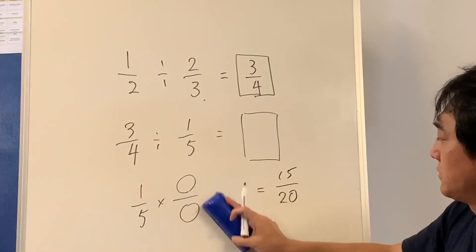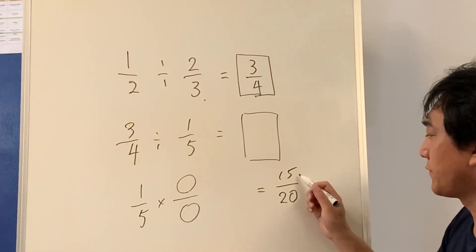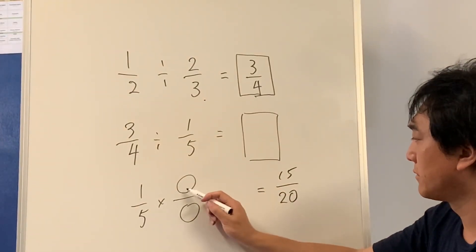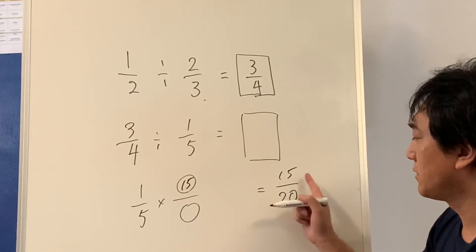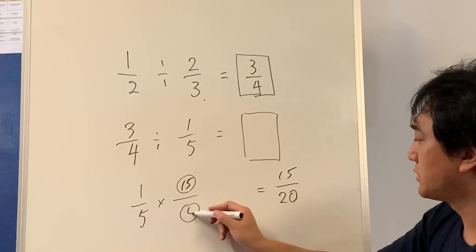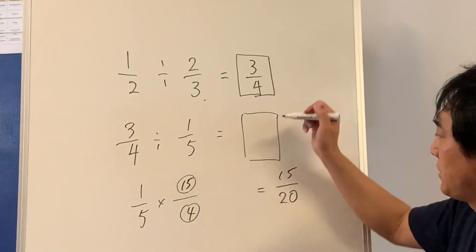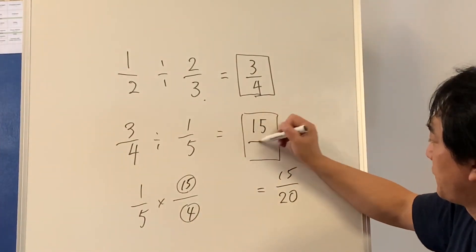So twentieth by fifteen. Right? Can I make fifteen twentieths? Yes I can. Again, one times fifteen is fifteen. Five times four is twenty. So the answer is fifteen over four.